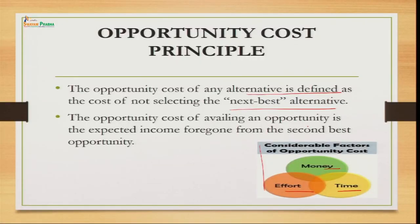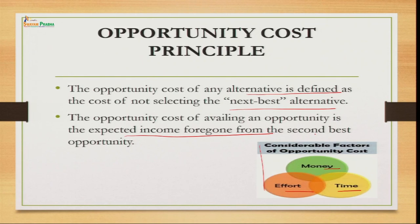If we have options and cannot do two things together, the cost of not doing the other thing is the opportunity cost. The opportunity cost of availing an opportunity is the expected income foregone. You could have earned income from the alternative, but because you sacrificed that option, that expected income which is foregone becomes your opportunity cost from the second-best alternative.